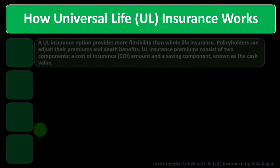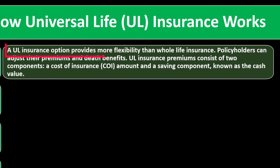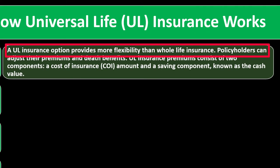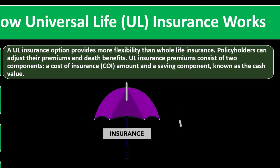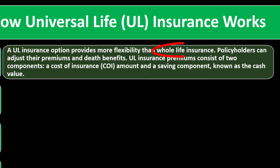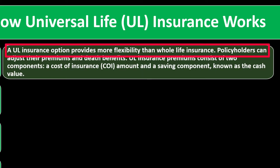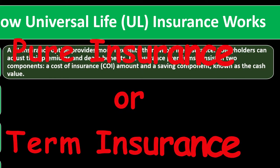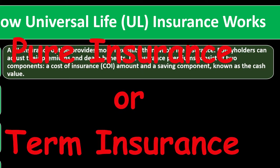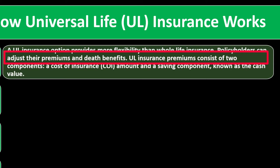How universal life UL insurance works. The UL insurance option provides more flexibility than whole life insurance. It is another category on the side of permanent insurance — whole life and universal life — as opposed to the other major category, which is pure insurance or term insurance. Policyholders can adjust their premiums and the death benefit, so you have that flexibility, which is nice.